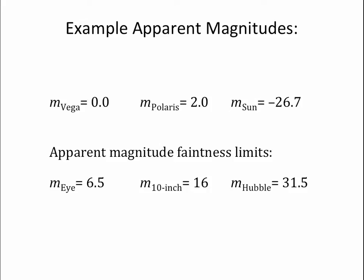How faint can we go? The eye alone can get to about magnitude 6.5, depending on how dark the sky is, how long you've allowed yourself to adjust, and how clear the weather is. Magnitude 6.5 is about 300 times fainter than Vega. A 10-inch telescope, like what we have at the Commerce Observatory, can see to a magnitude of 16 — that's 10,000 times fainter than the eye alone. This is one reason telescopes are useful: they collect a lot more light.